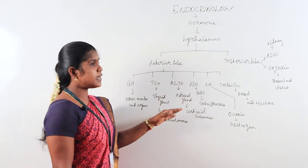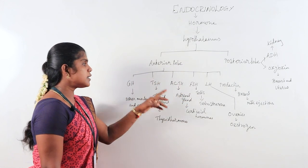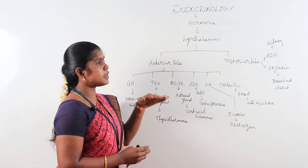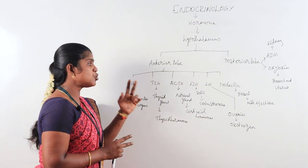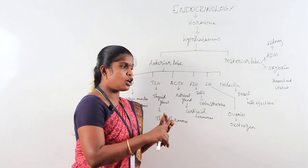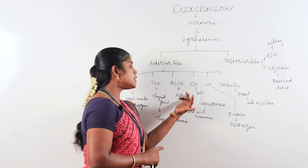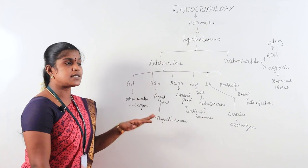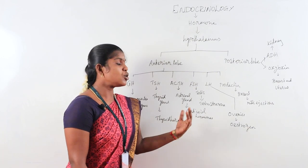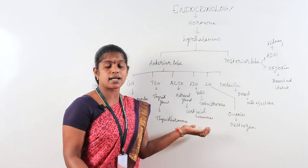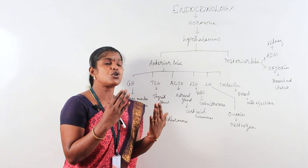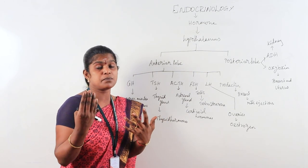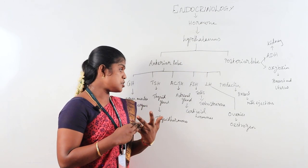The adrenal gland is divided into medulla and cortex. Medullary hormones include epinephrine and norepinephrine. Cortex hormones include mineralocorticoids, sex corticoids, and glucocorticoids. Glucocorticoids act in glucose metabolism and sex corticoids are involved in the reproductive system.